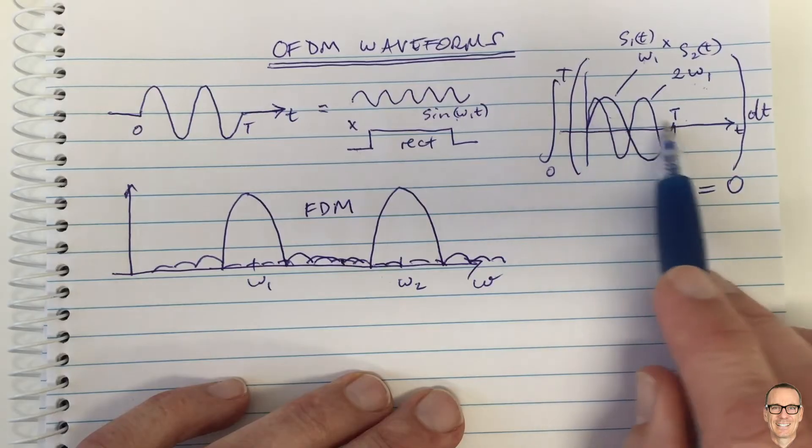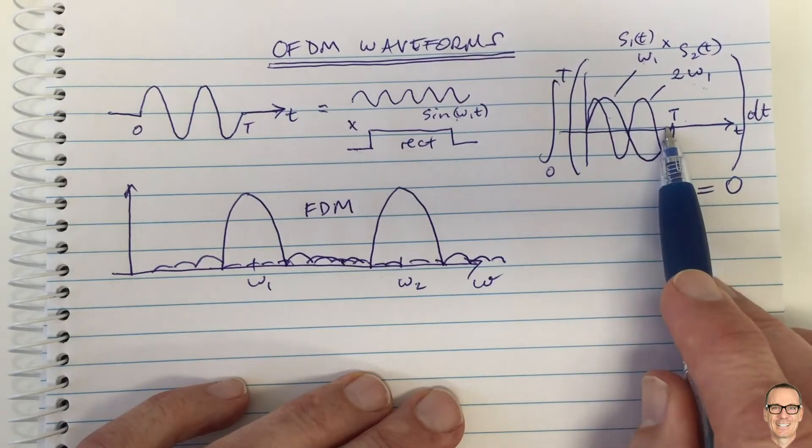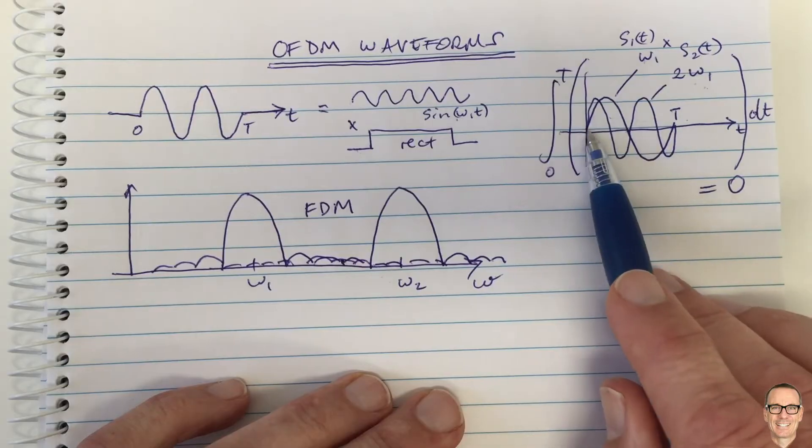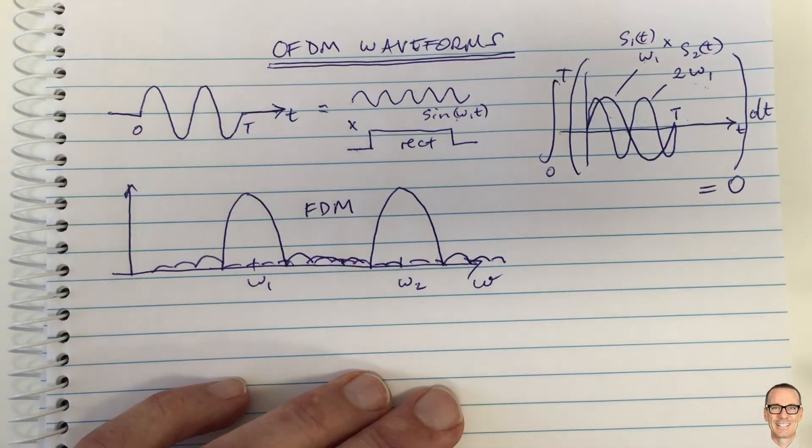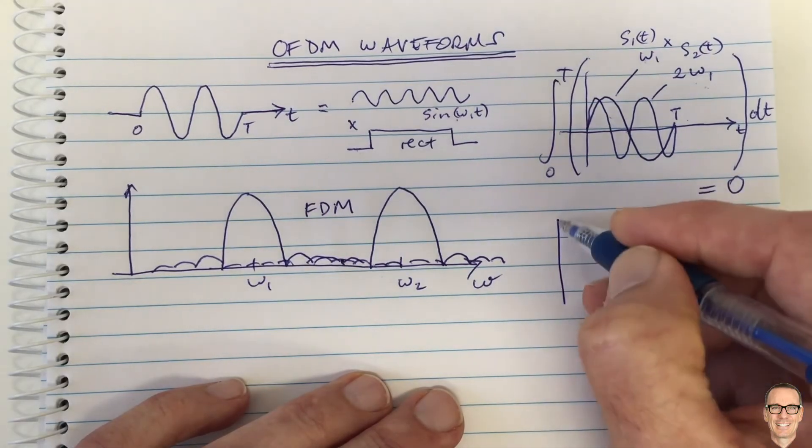Because there's this multiplication that happens in the matched filter, and the other waveform is going to contribute zero to the waveform that you're decoding, and that's why they're orthogonal. And in the frequency domain,